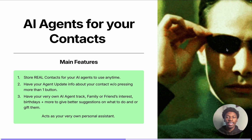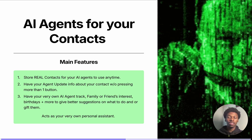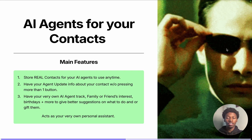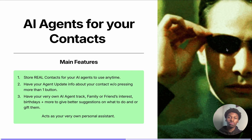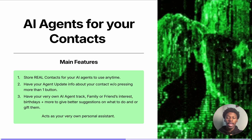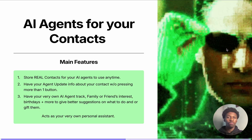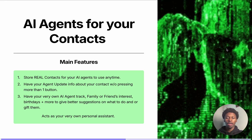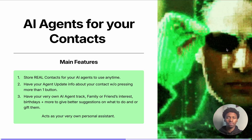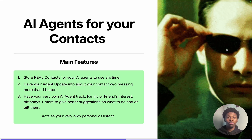It's 2025 and AI agents are here, transforming the way we get things done. In this video, I'll show you an AI agent that I've built that you can use to store real contacts for your personal AI agent to use at any time. You'll have your agent update info about your contact without having to press more than a button. You'll have your very own AI agent track family or friends' interests and birthdays to give you better suggestions on what to gift them, acting as your very own personal assistant.